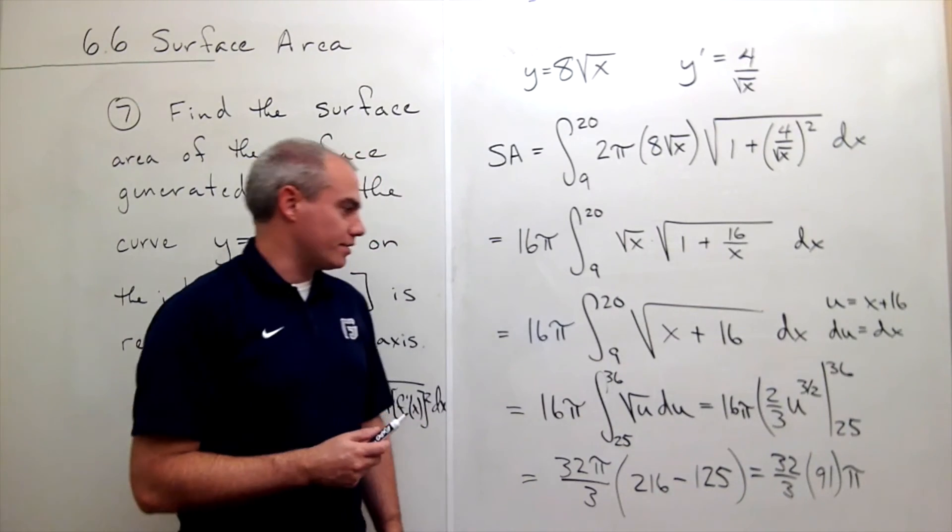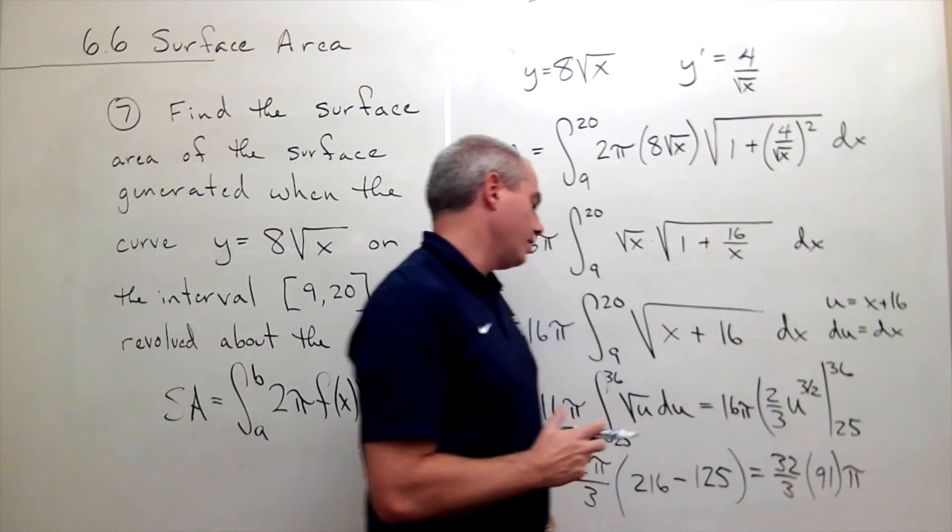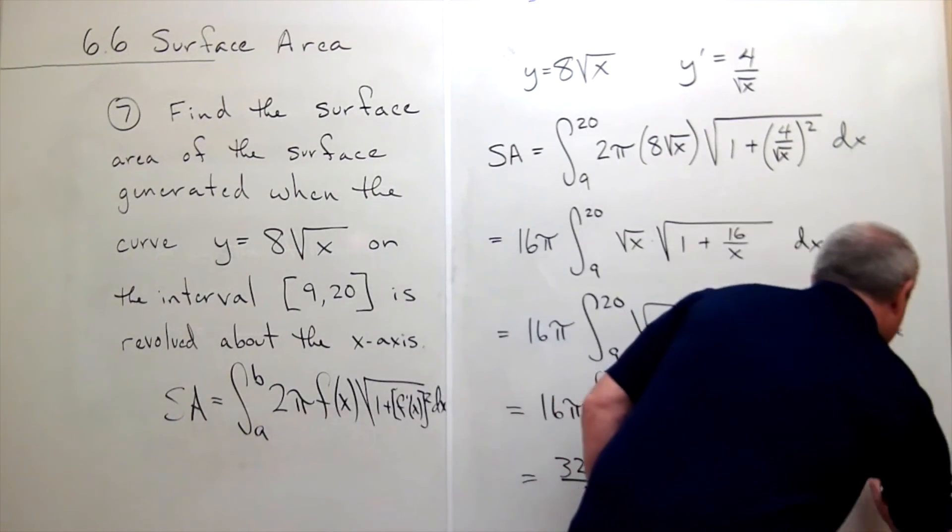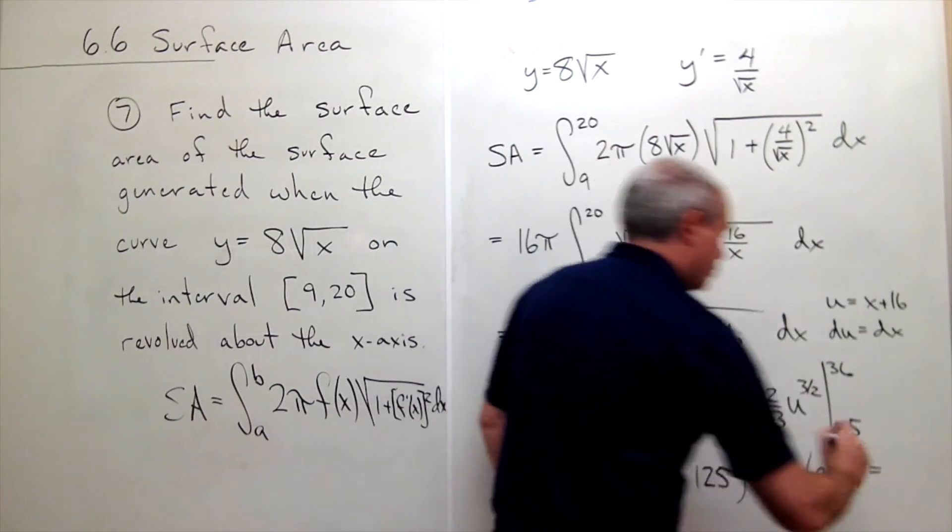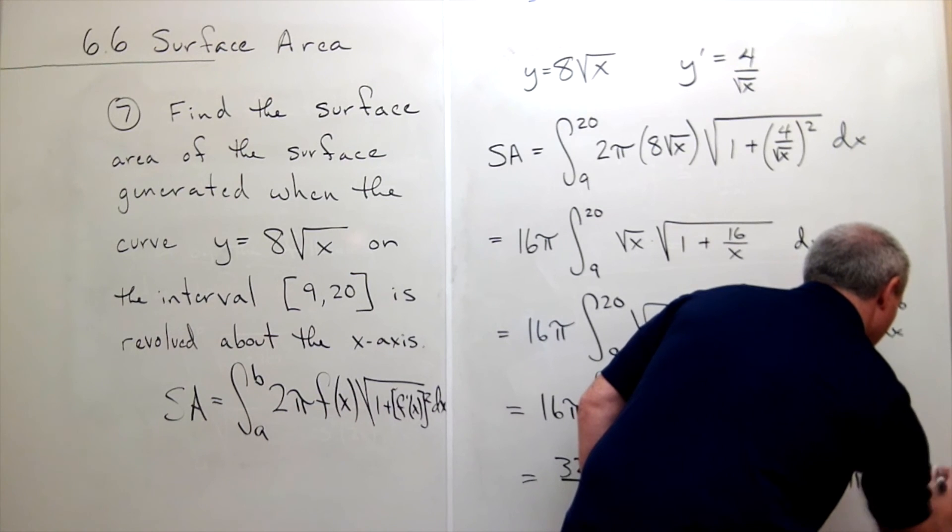Everything's good. Now we just need to multiply this out. 32 times 91, that's going to be 2912 over 3 times π.